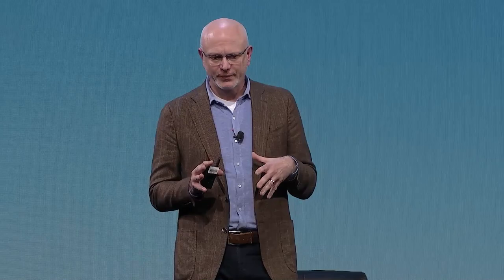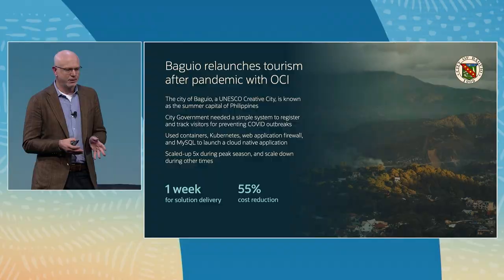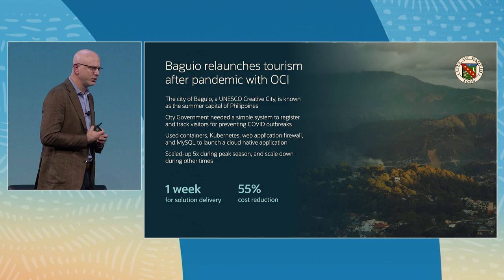We're seeing customers adopting this infrastructure and really benefiting from an ease-of-use perspective. Baguio is a Filipino city centered on tourism that wanted to continue offering services to tourists during the COVID pandemic. They used our Kubernetes implementation, our web application firewall, and a MySQL back-end, and within a week were able to get a COVID contact tracing solution available online — at a significant cost reduction from their earlier on-premise deployment of similar capability.